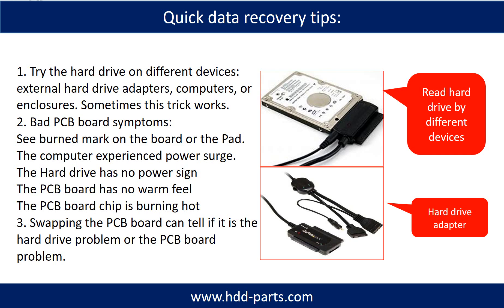There are some simple ways to recover data from a hard drive. One of them is to try to read the hard drive by different devices, like different external hard drive adapters, computers, or enclosures — because different devices use different ways to read a hard drive, and sometimes this trick works. Another way is swapping the hardware PCB board, which can fix the problem caused by the PCB board. There is a cost to swapping the PCB board, but it is much cheaper than sending the hard drive to a data recovery firm.